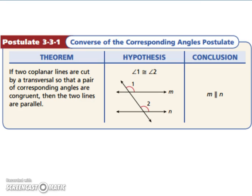Let's look at the converse of the corresponding angles postulate. If two coplanar lines are cut by a transversal so that a pair of corresponding angles are congruent, then the two lines are parallel. So if your two corresponding angles are congruent, then the two lines have to be parallel.